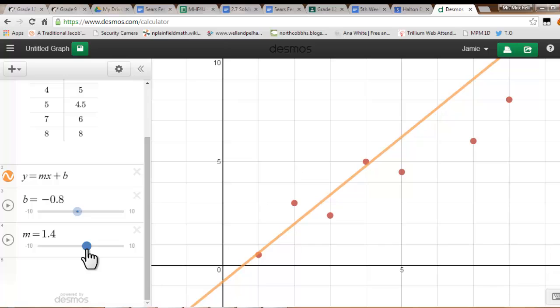On your Desmos file, maybe you can try and make what you think is your best line of best fit, and I'll do the same on mine. I think my best line of best fit for this particular set of data would be y equals 0.9x plus 0.5, but you might have something different. That's okay because we're just approximating. All of us are going to have slightly different equations.